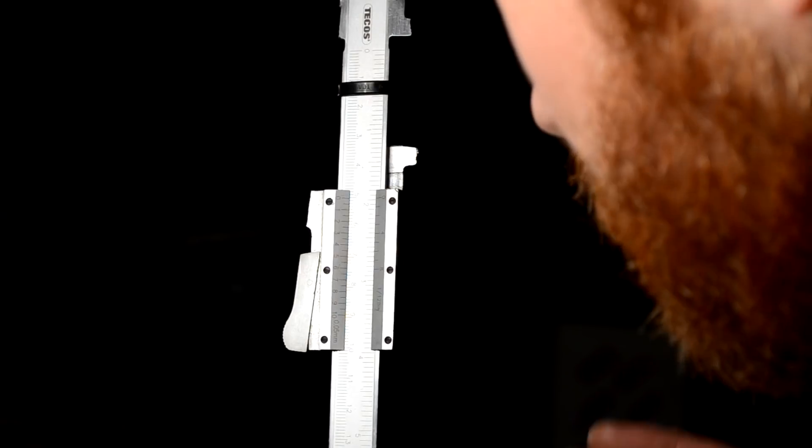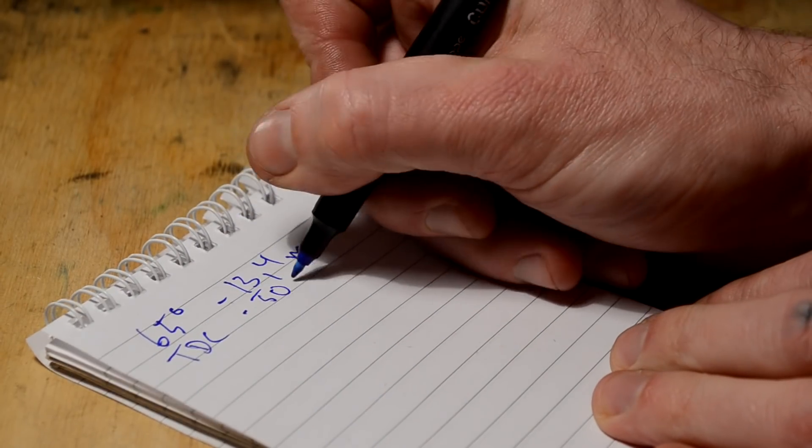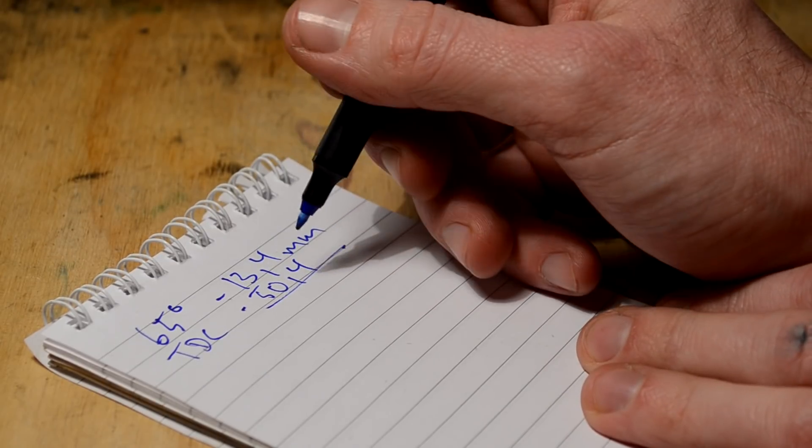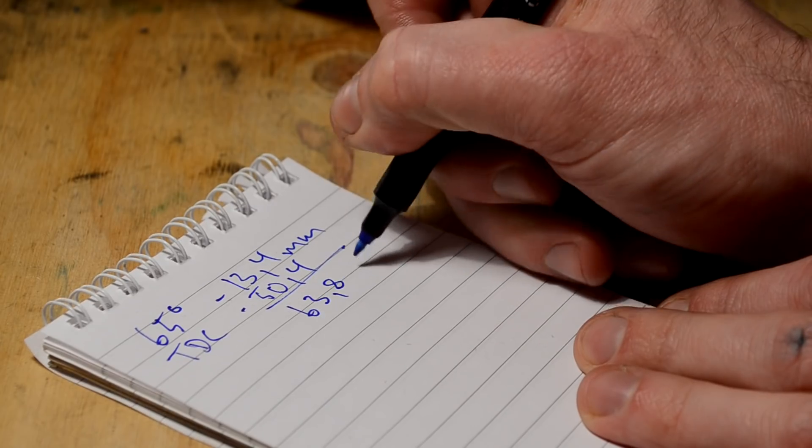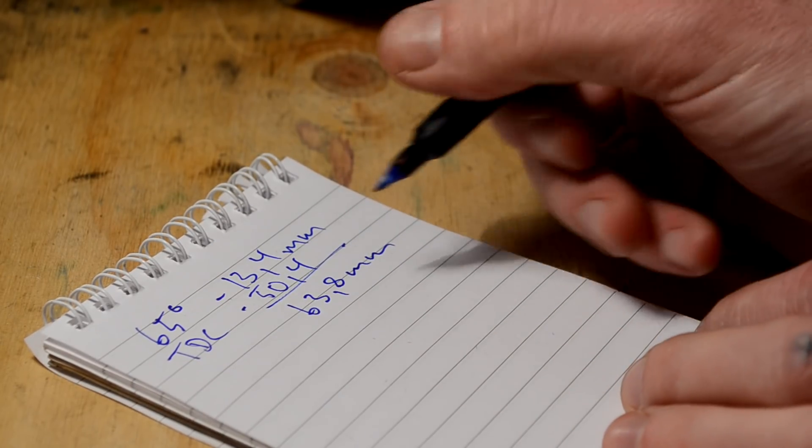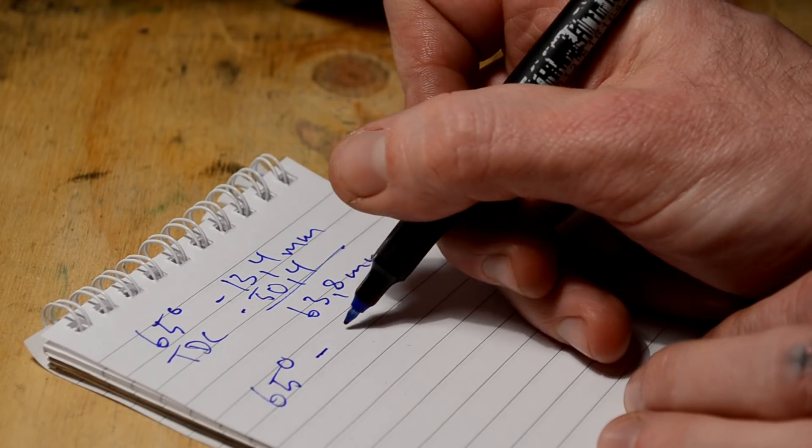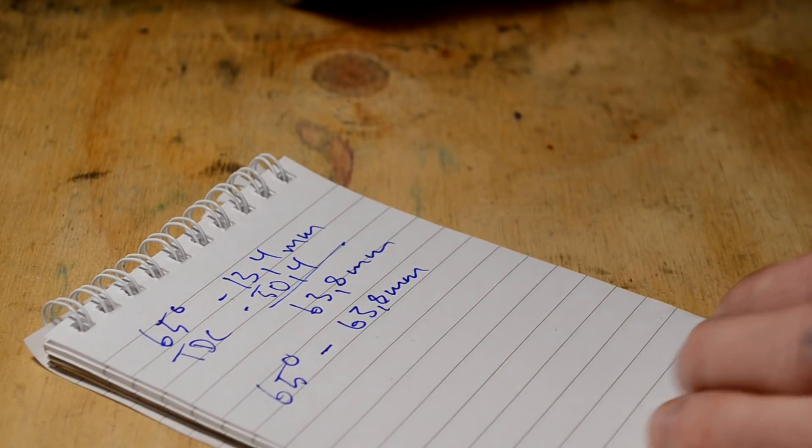So top dead center is at 50.4 millimeters. 13.4 plus 50.4 is 63.8 millimeters. So in this case 65 degrees before top dead center is 63.8 millimeters on my calipers.